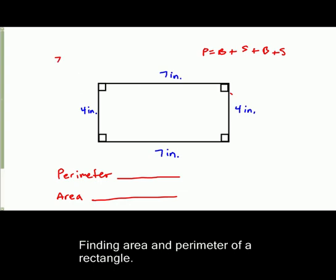So here's the base and the sides. So we got 7 plus 4 plus 7 plus 4. Oops, that's not a 4. That is a 7.